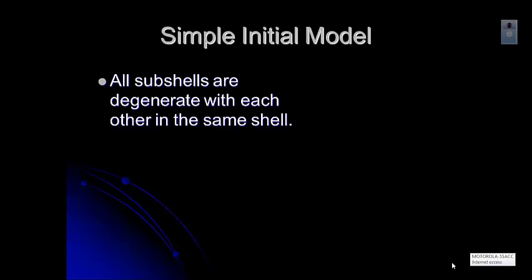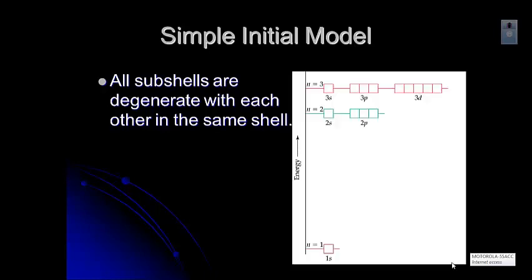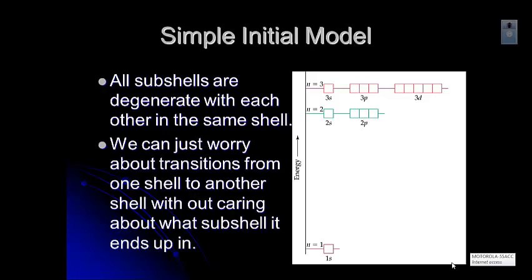So what we know about the hydrogen atom is that all of the subshells are degenerate. Degenerate means they're at the same energy level with each other in the same shell. You've seen this little model before when we talked about the electron configurations. But you can see that they're all on the same level instead of 2s being below 2p, 3s being below 3p. They're all on the exact same level because there are no electrons in there. And so we don't have to worry about transitions. We can just worry about transitions from one shell to another. We don't have to worry about which subshell it ends up in, whether it's 2s or 2p. It just makes it a lot less complicated.